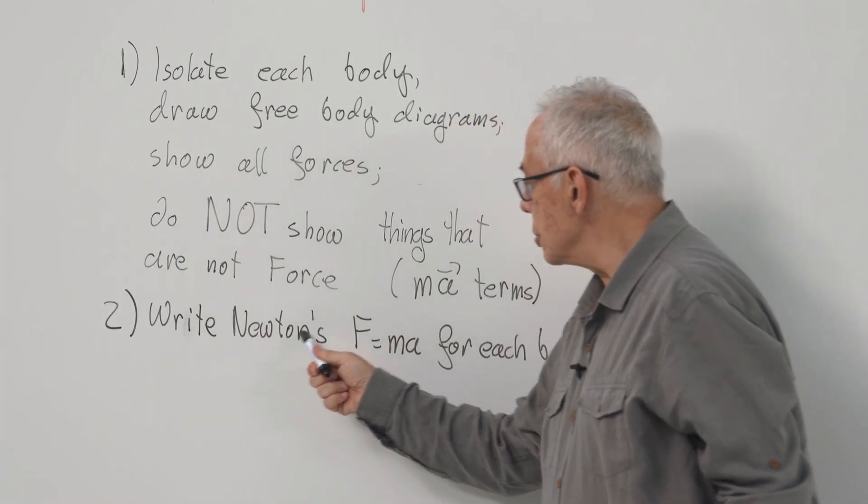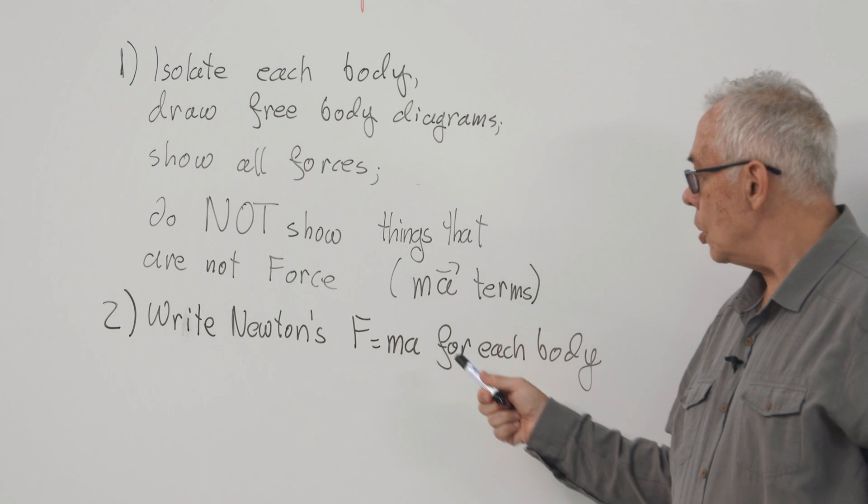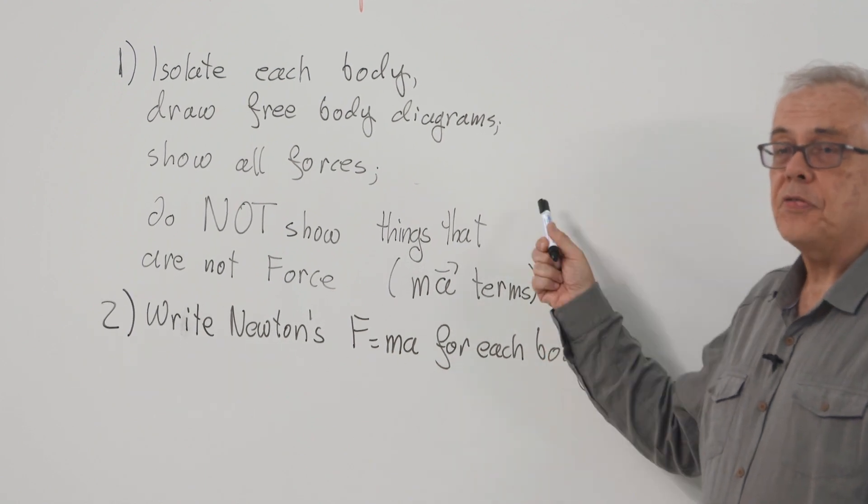Since they are on flat ground, obviously the gravitational force and the contact force are canceling each other. We are not concerned about motion in the vertical direction. Now, here I have the free body diagrams. Next, write Newton's F equals Ma law for each of these free bodies.